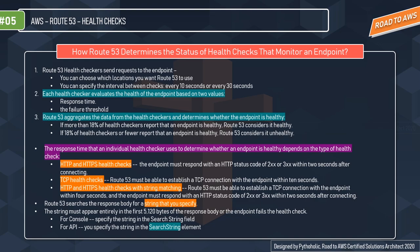Route 53 aggregates the data from all health checkers and determines whether the endpoint is healthy. If more than 18% of health checkers report that an endpoint is healthy, Route 53 considers it healthy. If 18% or fewer report it as healthy, Route 53 considers it unhealthy.